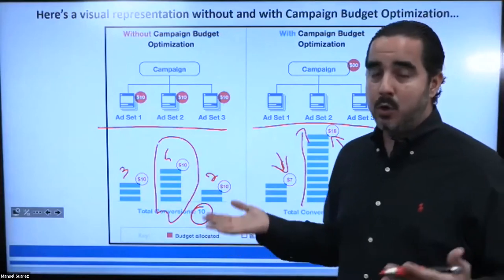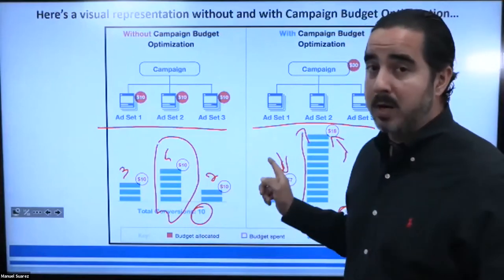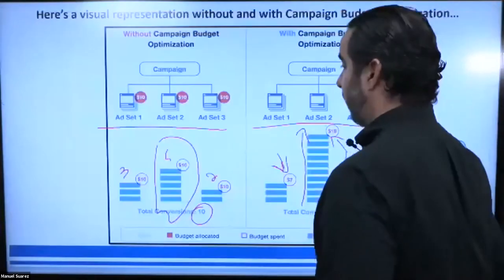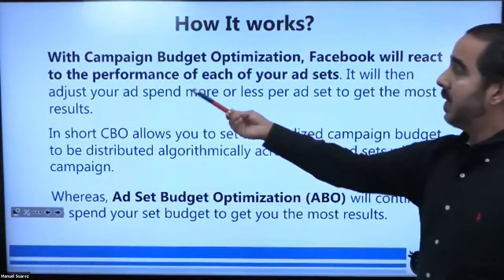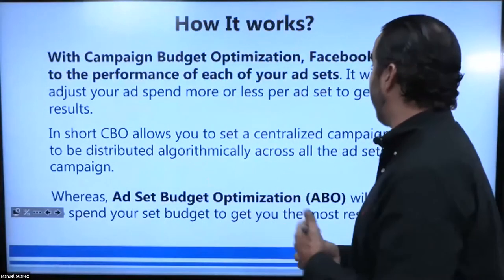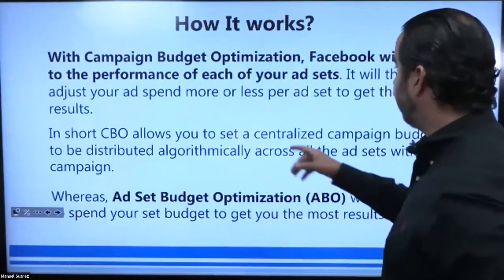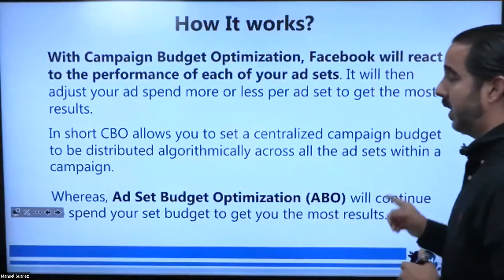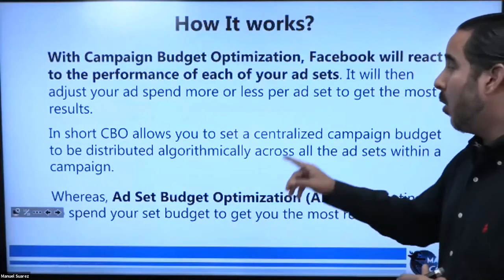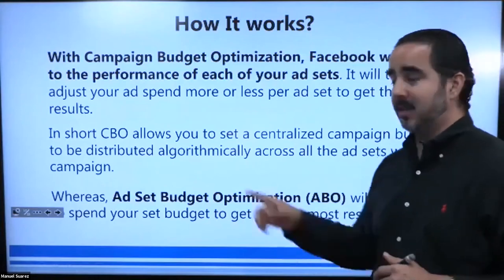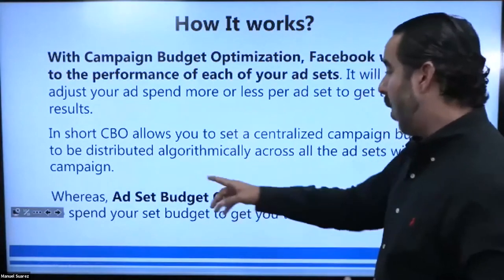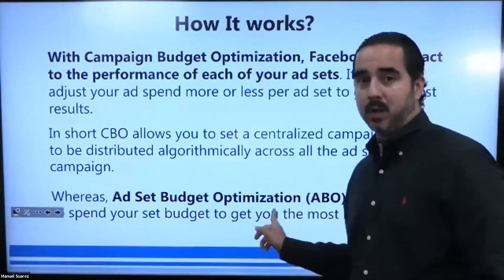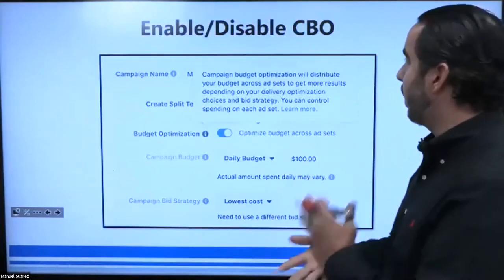Does that make it feel like you should be doing CBO all the time? That's what they're trying to suggest. But the reality is that's not the case — you shouldn't be doing that all the time because it's going to put some other things in danger. With CBO, Facebook will react to the performance of each ad set, adjust your ad spend more or less per ad set to get the most results, and distribute that budget algorithmically across all ad sets. Whereas ABO will continue to spend your set budget to get you the most results nonstop.